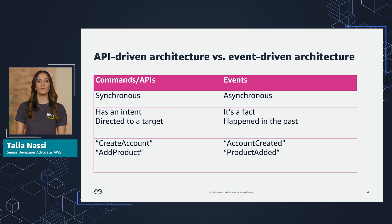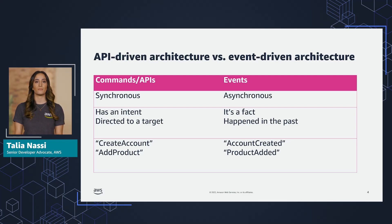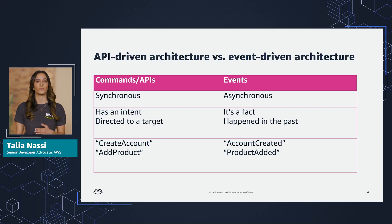A common way of making components of an application work together is through an API-driven request-response architecture, where you have requests and responses. For example, you query a list of orders from an orders API, and the orders API responds with a list of orders. This is an example of synchronous architecture — the system asking for the orders waits for the response, and you cannot move on until the response comes back.